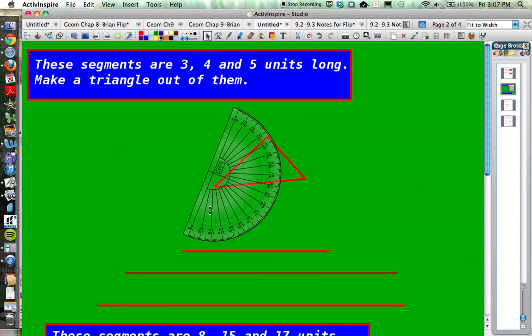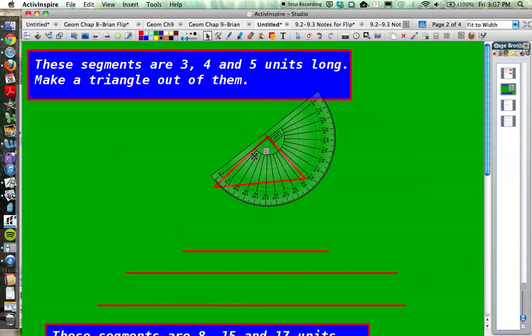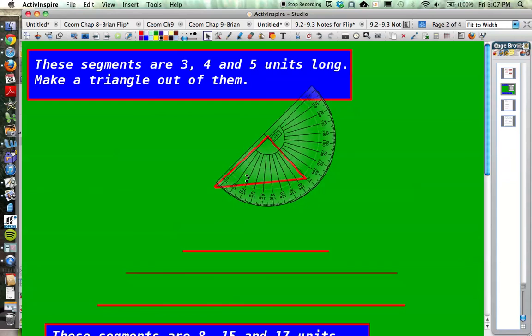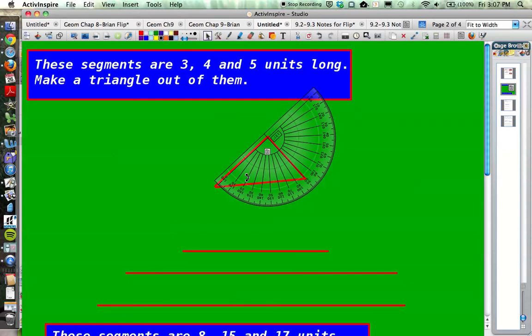I'm going to measure this angle using my protractor. Notice that angle is 90 degrees right here. So we have a 90 degree angle. Therefore, this is a right triangle.